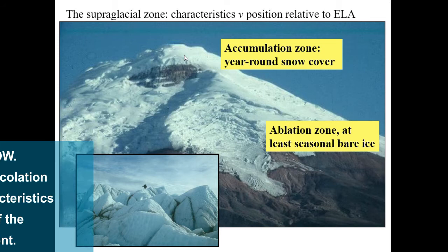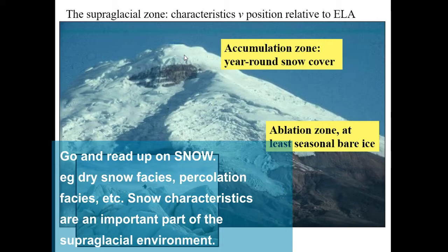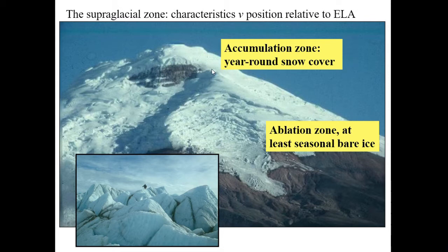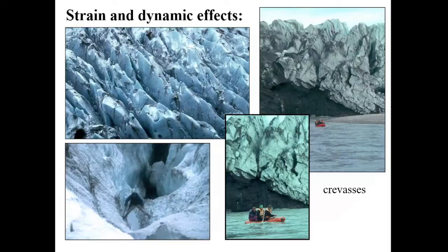By contrast, up in the accumulation zone in any healthy glacier with a prospect of survival, there should be year-round snow cover because the snow that falls each winter doesn't melt away the following summer. The accumulation zone typically has a snow-covered surface; in the ablation zone, for at least part of the year, you'll have bare ice. In these slides I'm going to focus on the ablation zone, just because you can see more clearly what's going on there.